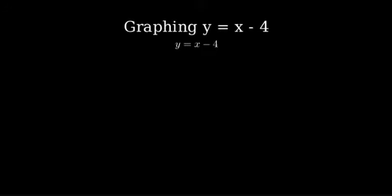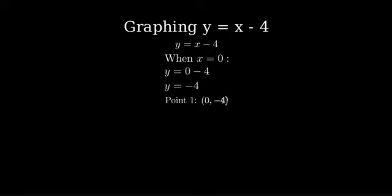Let's start by finding the y-intercept. The y-intercept is the point where the line crosses the y-axis, which occurs when x equals zero. So our first point is zero comma negative four.